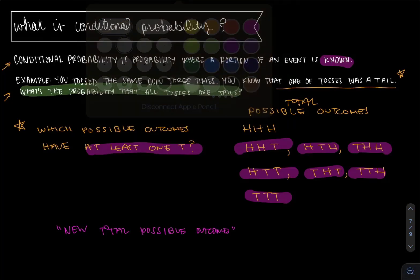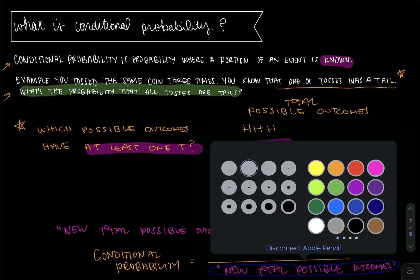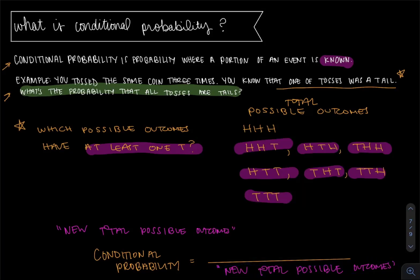So our fraction here for conditional probability, we know on the denominator that whole is going to be the new total possible outcomes. Let's make that pink to show that the denominator here is from our new known information.